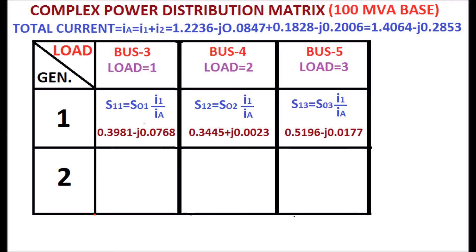The power from second generator to the first load at bus number 3. The power from second generator to the second load at bus number 4. The power from second generator to load 3 at bus number 5.